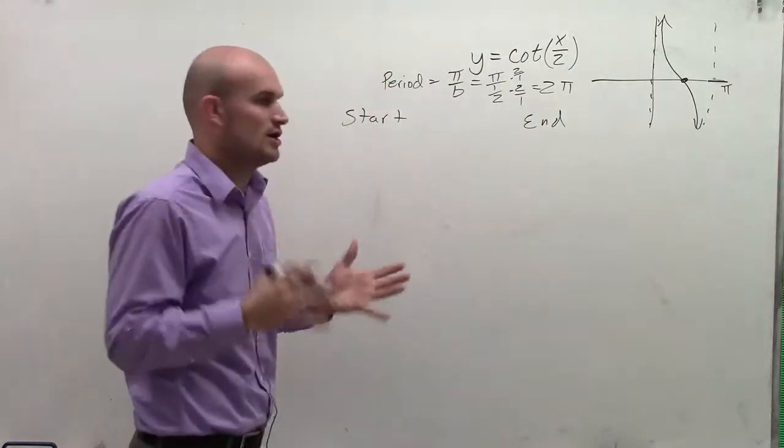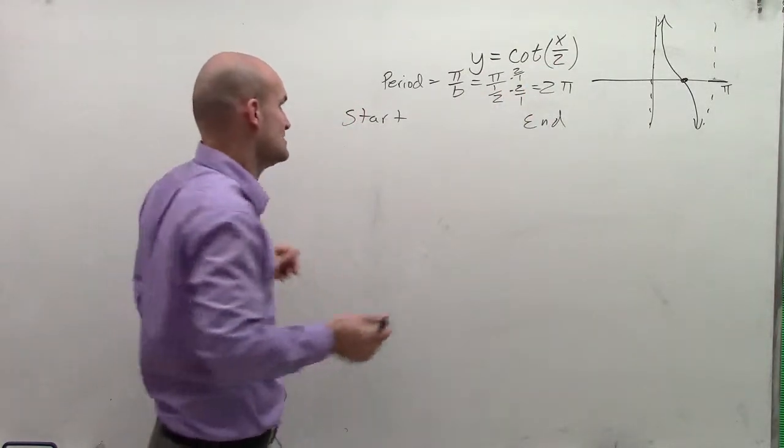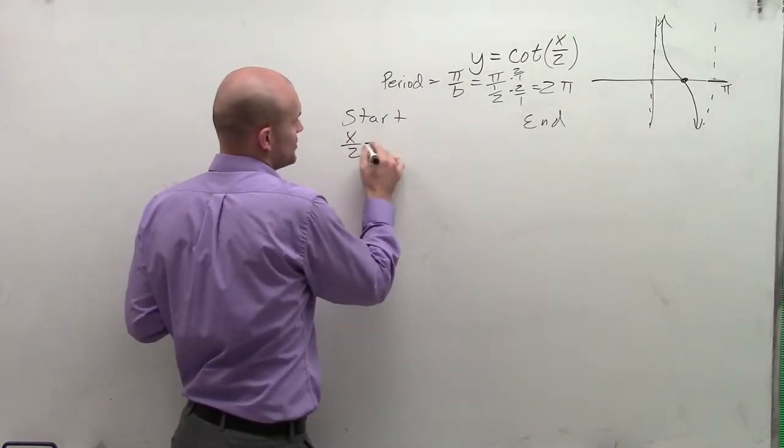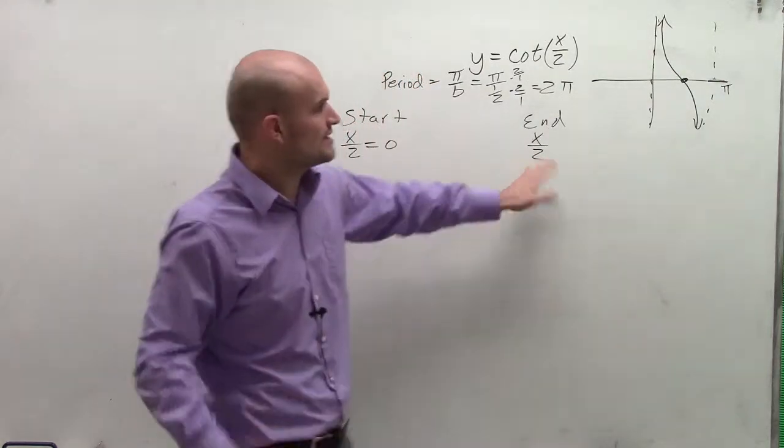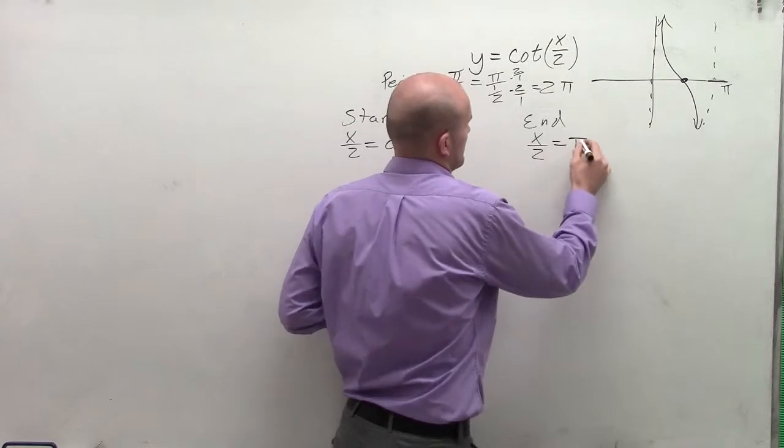So what we do is we take what's inside the function, and we set that equal to 0. So to do that now, I'm going to have x divided by 2 equals 0. And then we have x divided by 2. For the end, we're going to set it to our original initial period of pi.